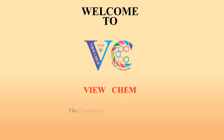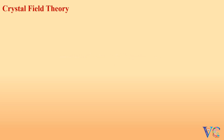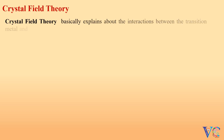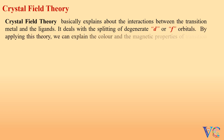Welcome to ViewChem, the Chemistry Animations Channel. Crystal Field Theory basically explains about the interactions between the transition metal and the ligands. It deals with the splitting of degenerate d or f orbitals. By applying this theory, we can explain the color and the magnetic properties of transition metal complexes.